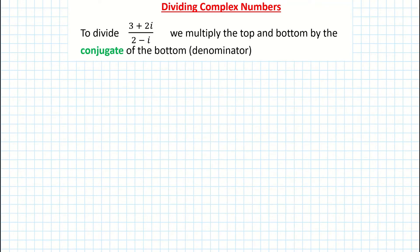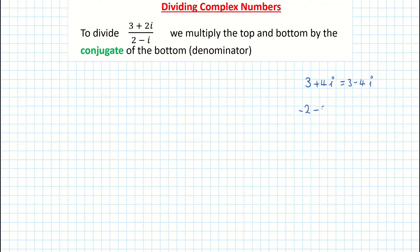You're looking at a keyword here in green: the conjugate. Basically in complex numbers, the conjugate, put simply, is you just changing the sign that's in front of the i. So the conjugate of 3 plus 4i is 3 minus 4i. The conjugate of minus 2 minus 5i is minus 2 plus 5i — you're just changing the sign in front of the i. That's the conjugate.